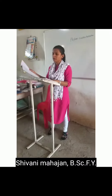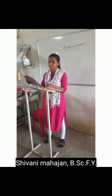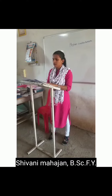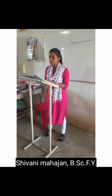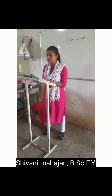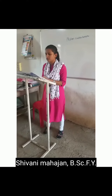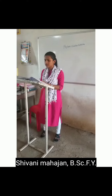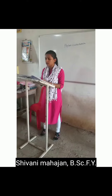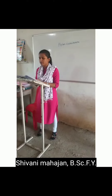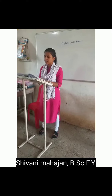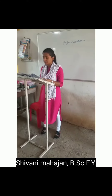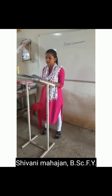Coelenterata may be defined as diploblastic animals with tissue grade of organs, radially symmetrical. They have a single gastrovascular cavity. These are the general characters of Coelenterata.